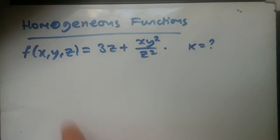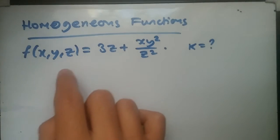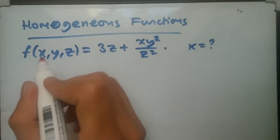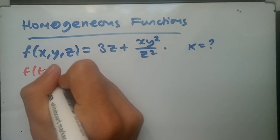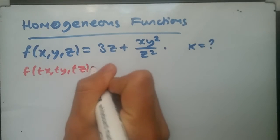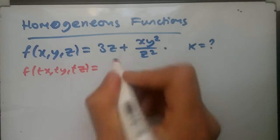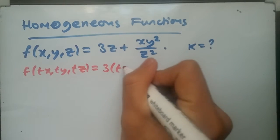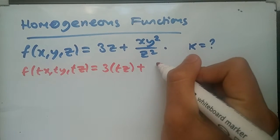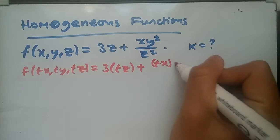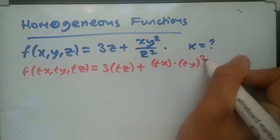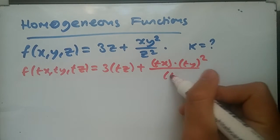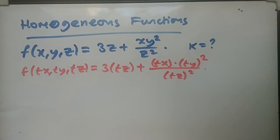So first things first, replace all parameters with tx, ty and tz. So here's the solution. We need to find f(tx, ty, tz) by replacing each variable. This means we'll have 3 times tz plus tx times ty all squared over tz all squared.